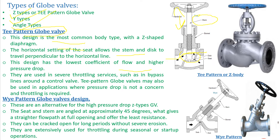This T-pattern design has a lower coefficient of flow and higher pressure drop. There is a three to four directional change in flow — the flow travels like the letter Z, changing direction three to four times inside the valve. These valves are used where severe throttling service is required, such as in bypass lines around control valves. They are also used in applications where pressure drop is not a concern.